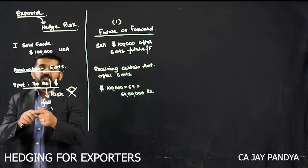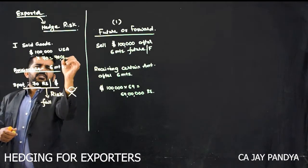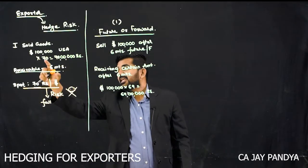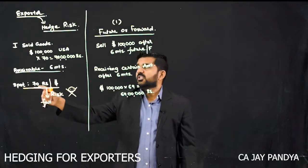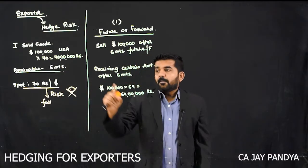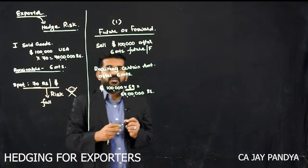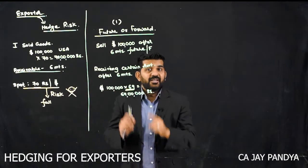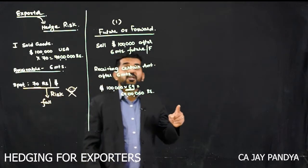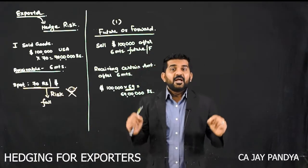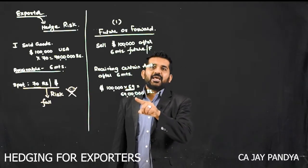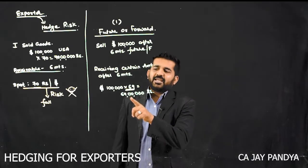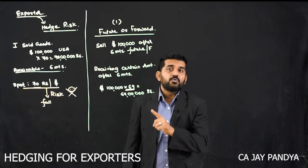You will say, sir, it is less than 70,00,000. First, I was never going to get 70,00,000 rupees because 70 is a spot rate and I am not going to receive $1,00,000 today — I am going to receive it after 6 months. By taking this forward, I have made a certain amount of 69,00,000 rupees. Had I not taken this forward, if the rate becomes 60 I will get only 60,00,000 rupees; if the rate becomes 50, only 50,00,000 rupees. Now it is certain that whatever is the rate, I will be getting 69,00,000 rupees. What if the price becomes 75? Then also I will be receiving only 69,00,000 rupees because this is a forward or future which is a compulsory contract.